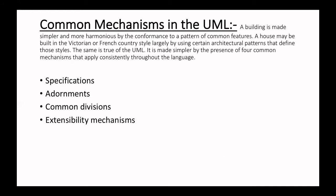Moving to common mechanisms in UML. After rules, diagrams, and building blocks, we now move to the mechanisms of UML. Building is made simpler and more harmonious by conformance to a pattern of common features. Just as a house may be built in a Victorian or French country style using certain architectural patterns, the UML is made simpler by the presence of four common mechanisms that apply consistently throughout the language: specification, adornment, common divisions, and extensibility mechanism.